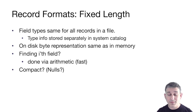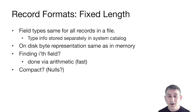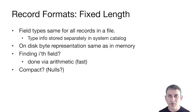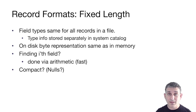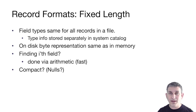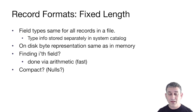Let's look at fixed-length fields first. The field types are the same for all records in a file, and the type information is stored in the system catalog. The on-disk byte representation is exactly the same as in memory — we don't do any serialization like Java does. We stay efficient and store the format verbatim on disk, interpreting raw bytes on these pages. To find the ith field in a fixed-length record, we use arithmetic: sum the lengths of the i-1 fields before it to get the offset.